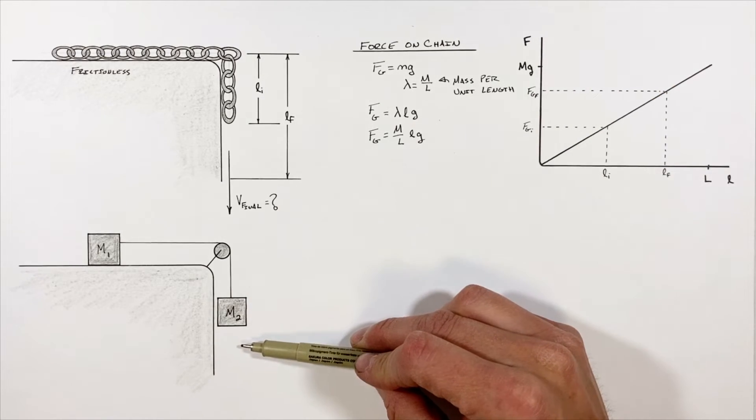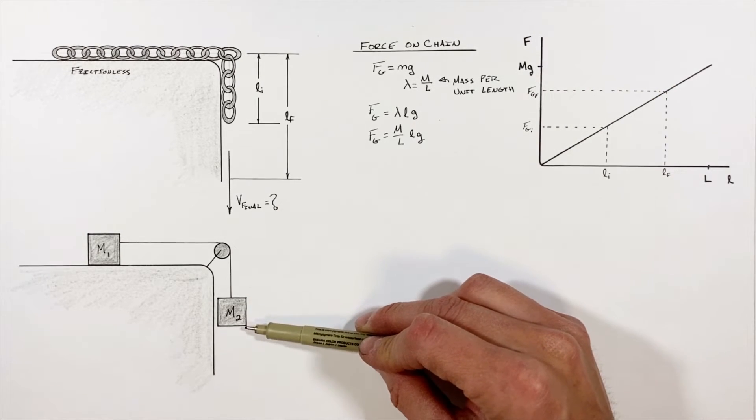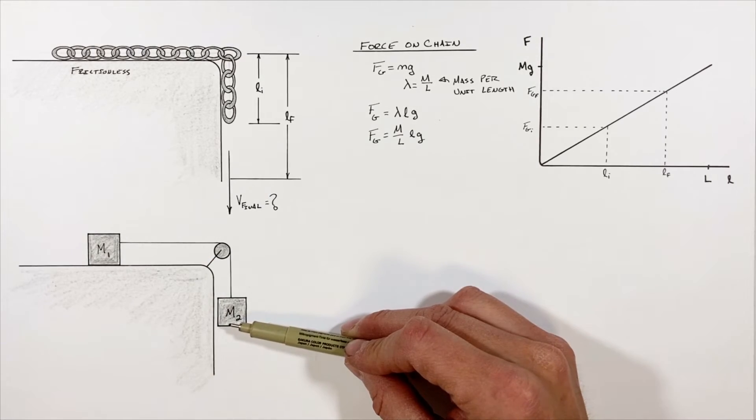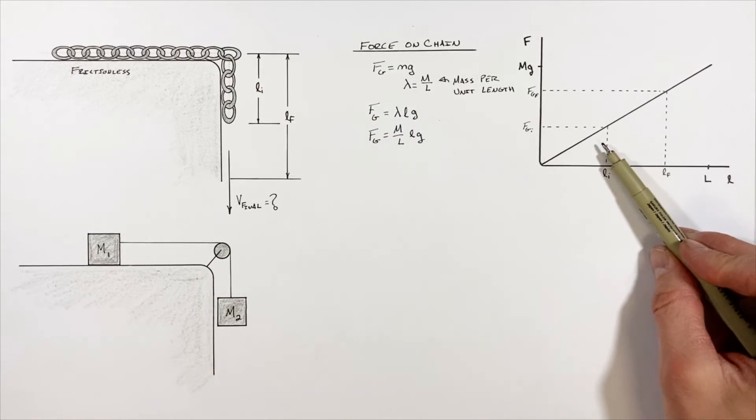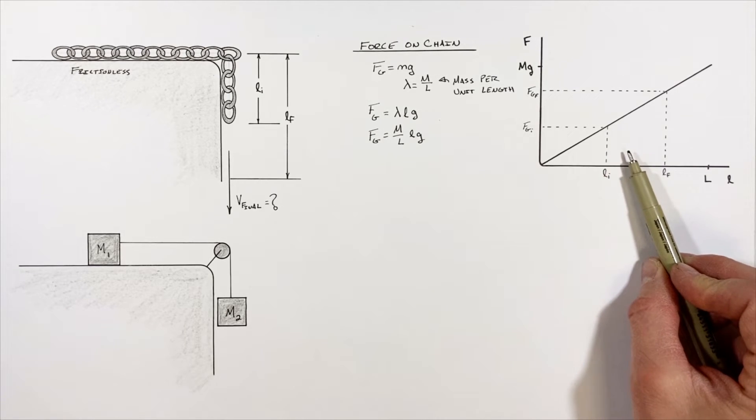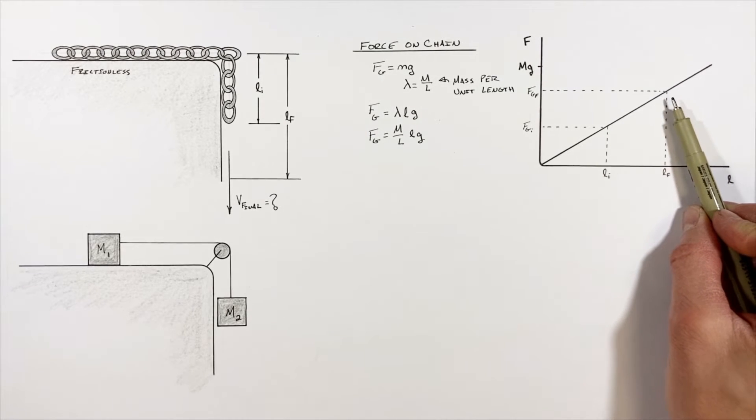So going back to our Atwood machine, as this block moved down there was a constant force of m2g acting on the block and the system. In the case of our chain, we can see that as the chain moves downward there's an increasing force acting on the system.